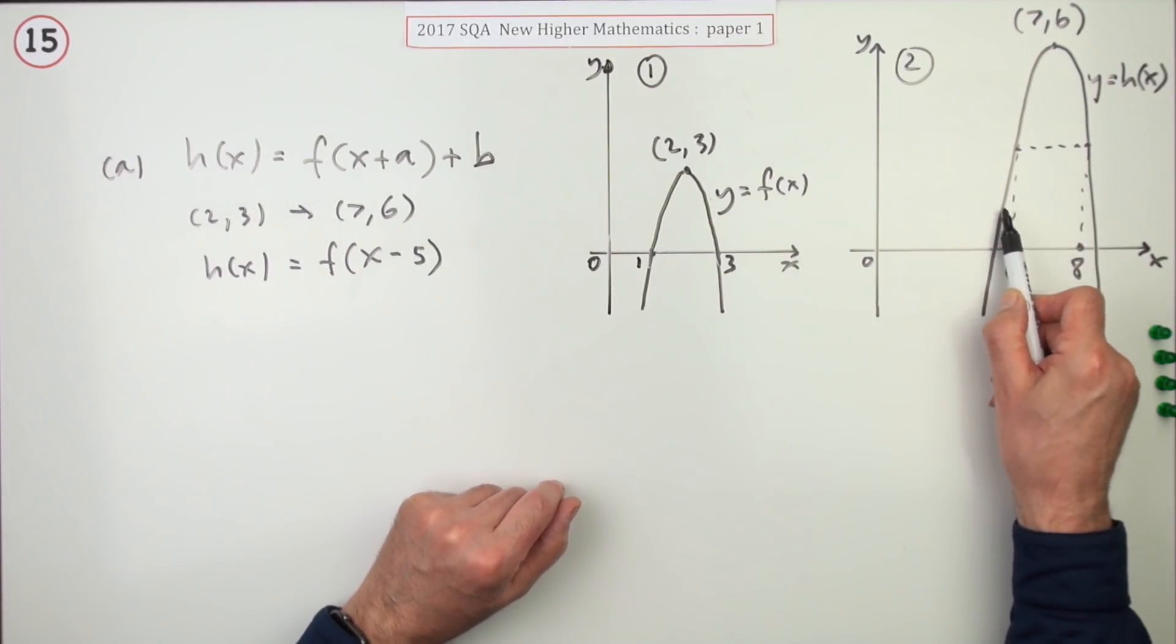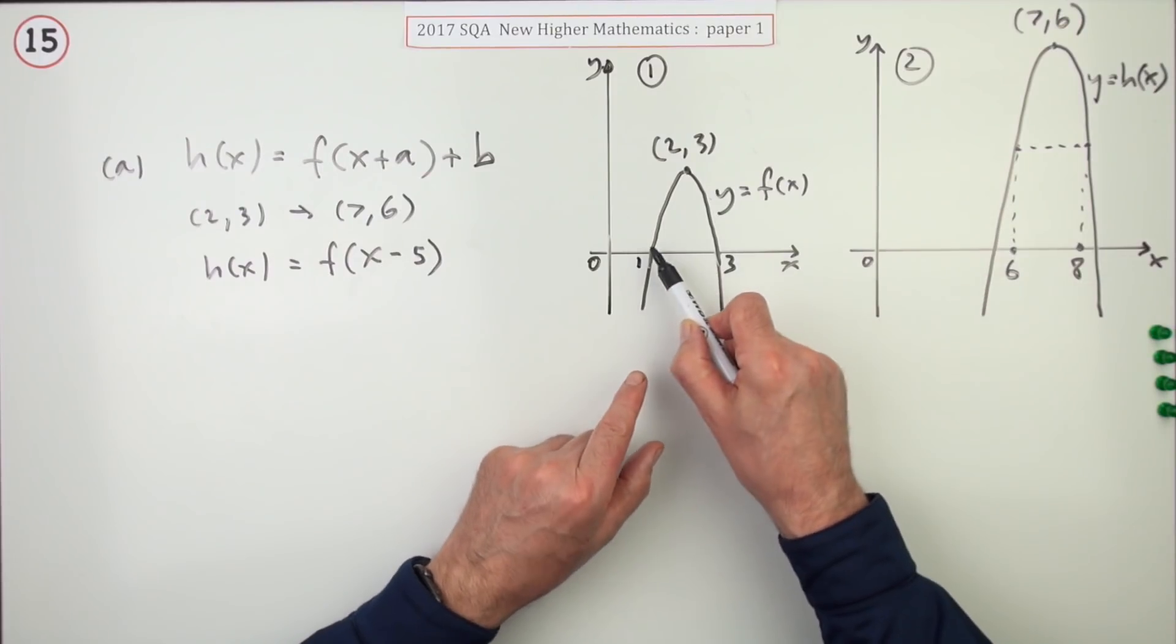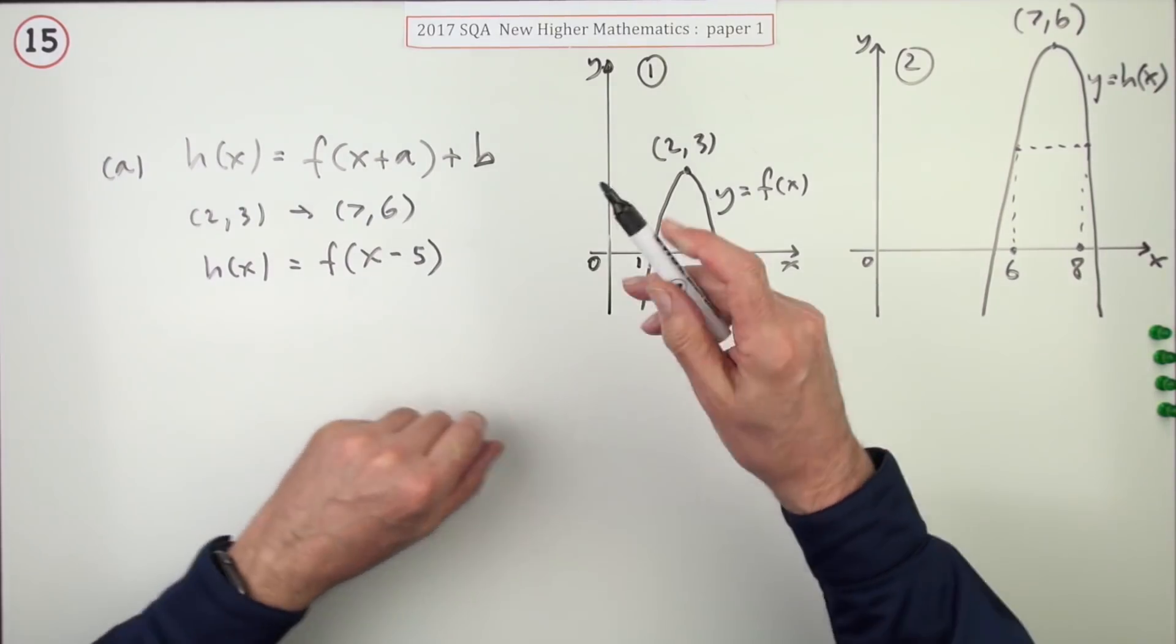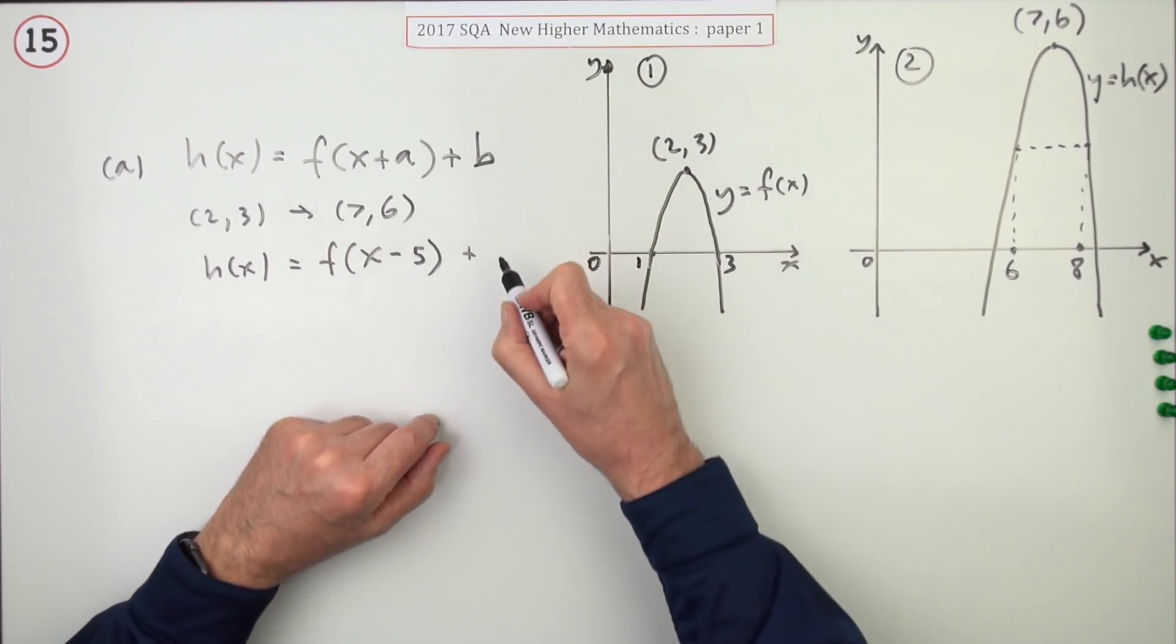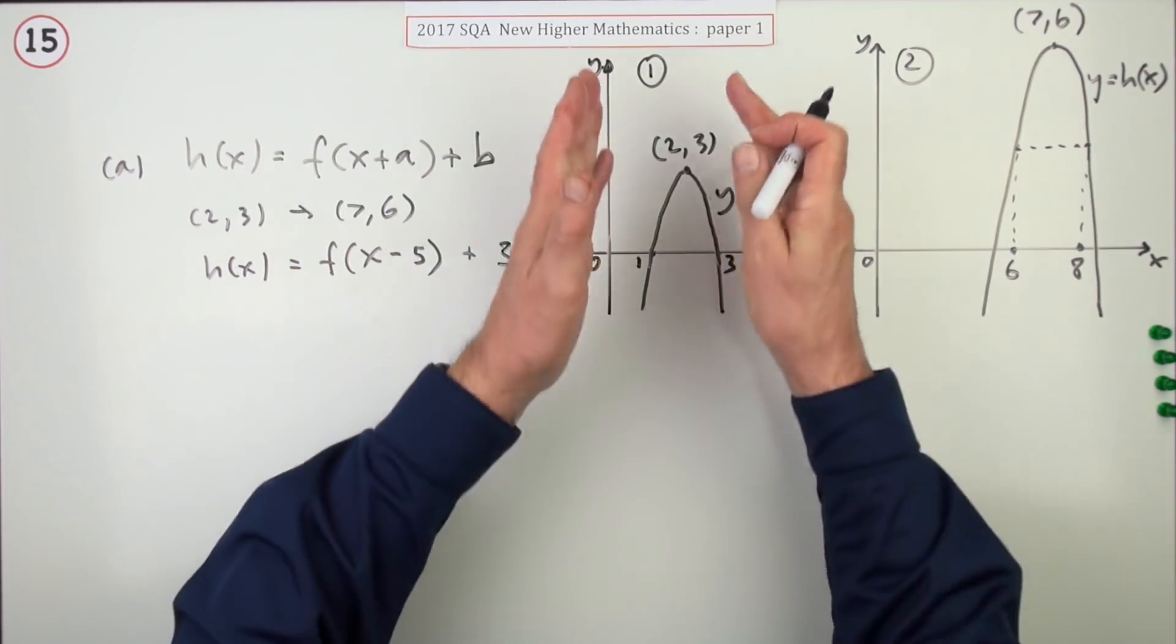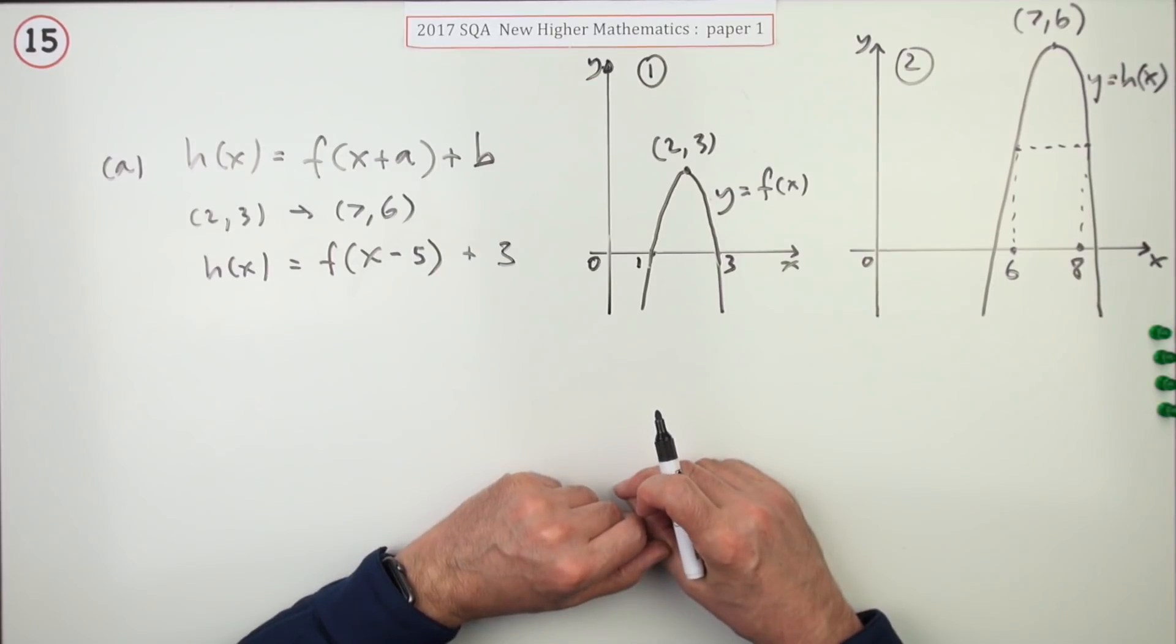Whereas what it actually means is to find any value here, any y coordinate here in the second graph, you've got to go back 5 to find it. And from 3 to 6, it's gone up 3 and that is just as straightforward. All the y coordinates have climbed by 3.